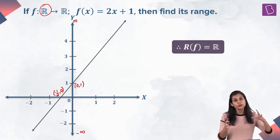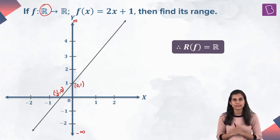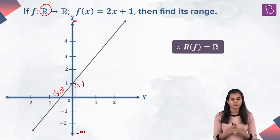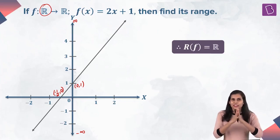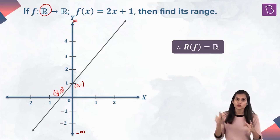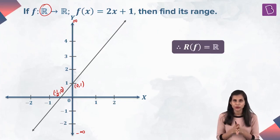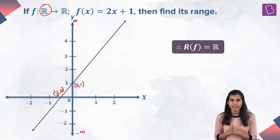So the range comes out to be the set of all reals. That means when you are inputting all the real numbers inside machine f, the output is all the real numbers. You had the same machine f. When you are changing your inputs, your output is also changing. Corresponding to the actual domain of the function — which is the set of all reals — the range is the set of all reals.